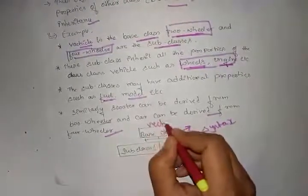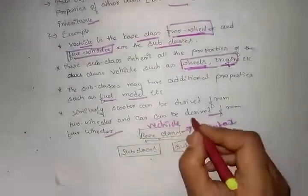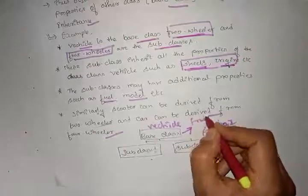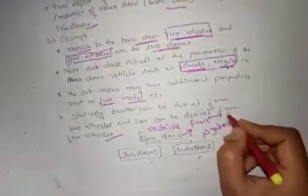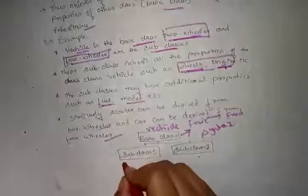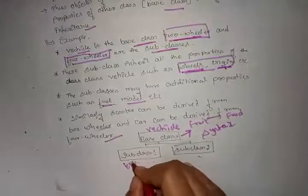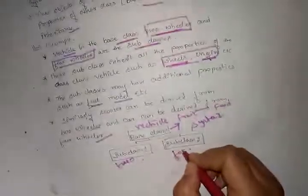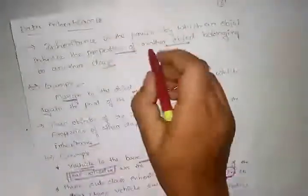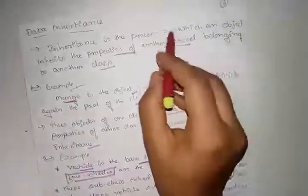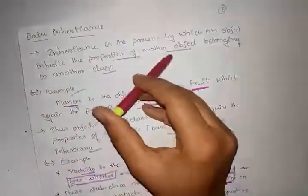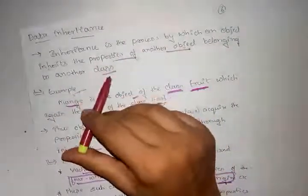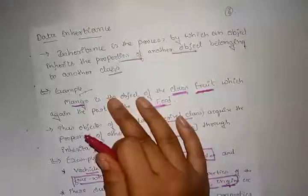To summarize, inheritance is the process by which an object inherits the properties of another object belonging to another class. Examples include: base class vehicle with subclasses two-wheeler and four-wheeler; base class fruit with subclass mango; and base class food. Understood.